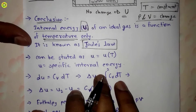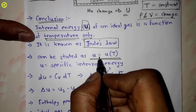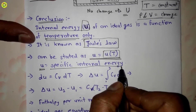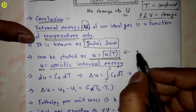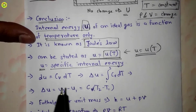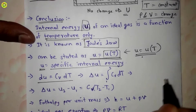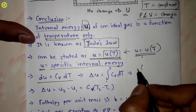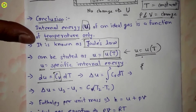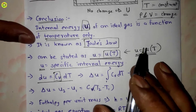Joule's Law states that u is a function of T only, where small u is the specific internal energy. Now we differentiate this equation u = u(T). After differentiating, we get du = cv·dT, where cv is the specific heat at constant volume.